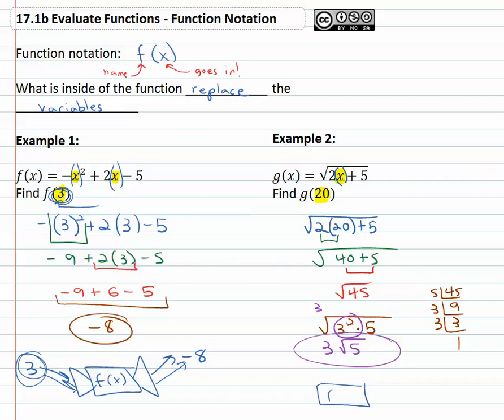So again visually what we're working with, with the function machine, we're taking the number 20 this time and throwing it into the function machine. And what came out was 3 times the square root of 5, that's what we're looking for. When we plug a number into the function, what comes out? And the way we find it is whatever is inside the function will replace the variables.